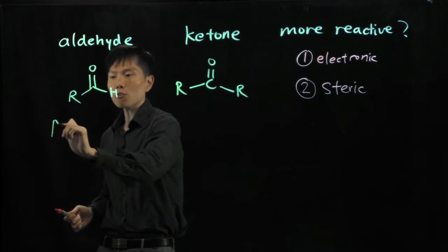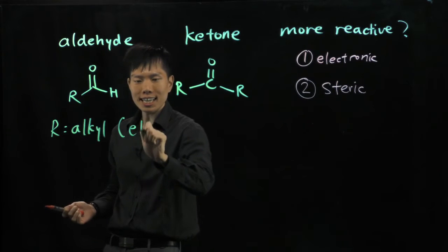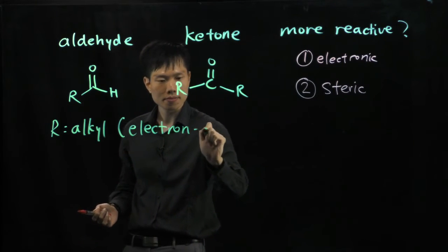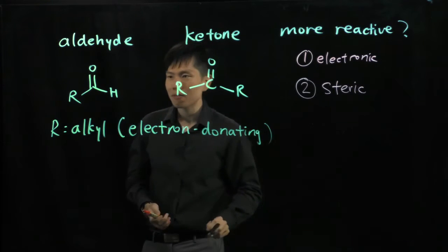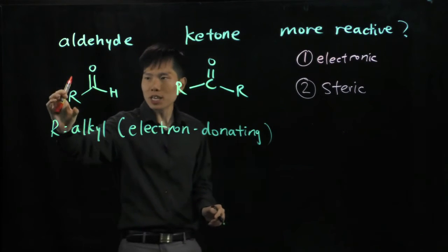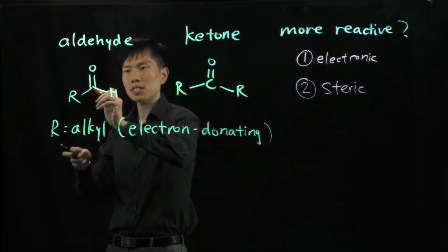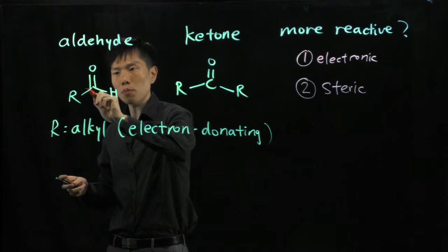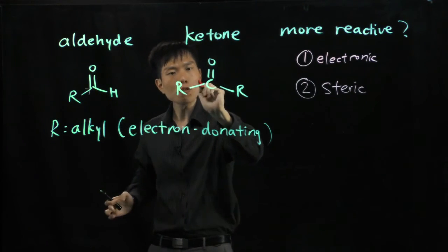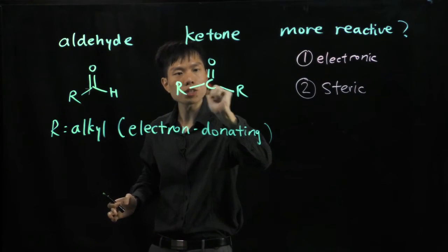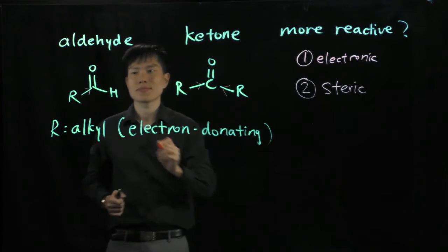Now we notice that R groups are your alkyl groups, so they are electron releasing, or we can say donating. Which means to say that this R group here will push electrons towards the CO double bond carbon. In the ketone, you have got both sides of the alkyl that push electron density towards this carbon.